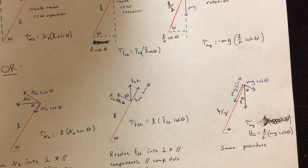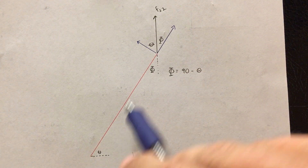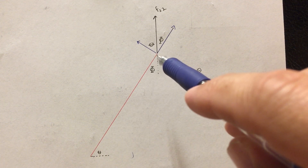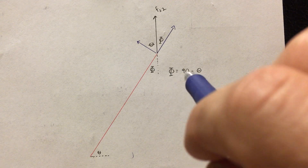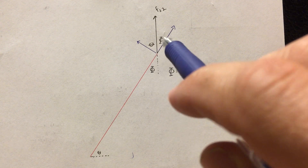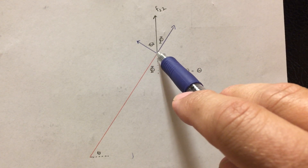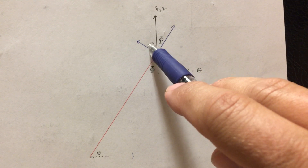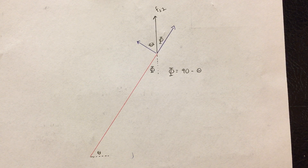Let me quickly run over the geometry for the angle. Here's my ladder; this is theta. Drawing a perpendicular line defines angle phi, where phi equals 90 minus theta. From the geometry, if this is phi, these two lines are intersecting so this has to be phi. But since this is a 90 degree angle, this has to be 90 minus phi, which is theta. I hope this was helpful.